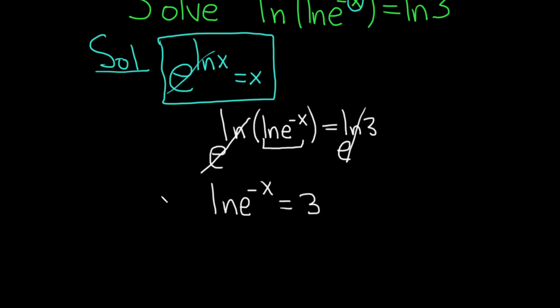And now we can use a very similar formula which says if you have the natural log of e to the x, that is equal to x. And again, this formula is also true for the same reasons. The natural log of x and e to the x are inverse functions. Essentially, they cancel each other.